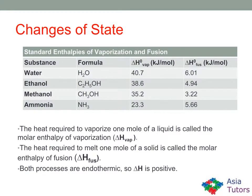We can also measure the heat given off or taken in for physical processes such as changes of state. The heat required to vaporize one mole of a liquid is called the molar enthalpy of vaporization, delta H subscript vap. The heat required to melt one mole of a solid is called the molar enthalpy of fusion, delta H subscript fus. Both processes are endothermic, so delta H is positive — they require heat.